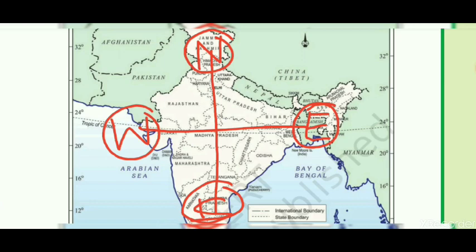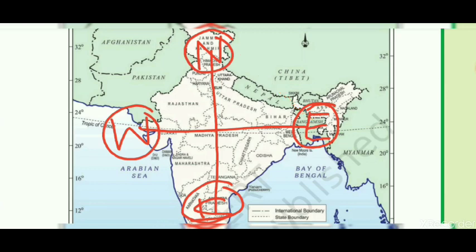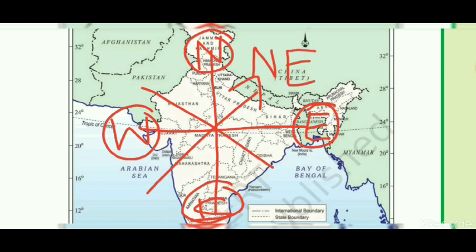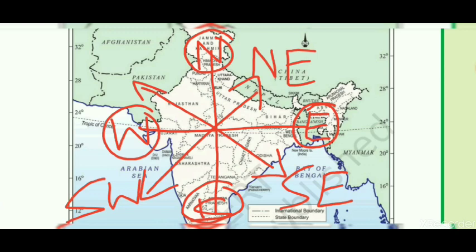Apart from cardinal directions, there are four other directions known as intermediate directions. Intermediate directions are those which lie between the cardinal directions. These are: Northeast, Southeast, Southwest, and Northwest.